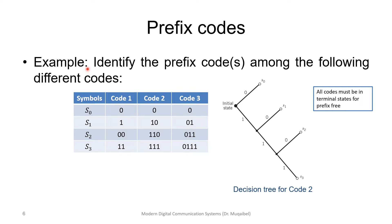Let's look at examples — identify the prefix codes among the following codes. Code 1 is not a prefix code because one codeword is the prefix of another. For Code 2, you can use the decision tree: starting from the initial state, zero gives symbol S0; going to one and branching again, one-zero gives S1, and so on, until all symbols are covered.